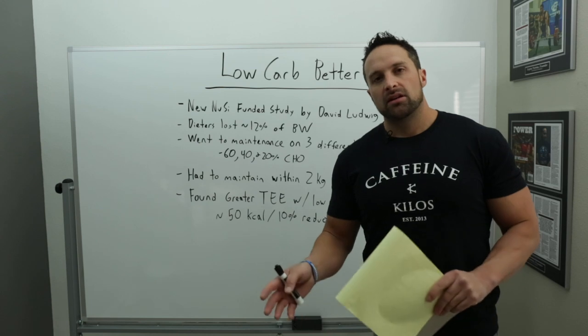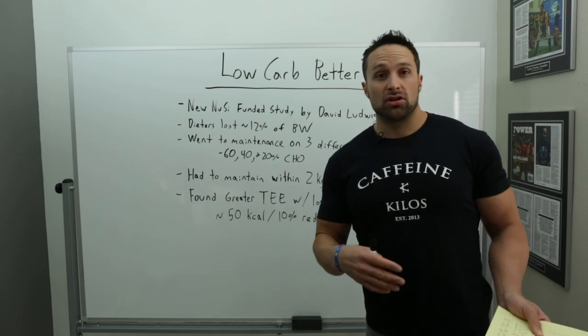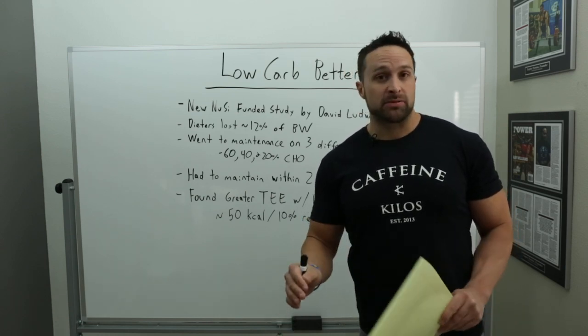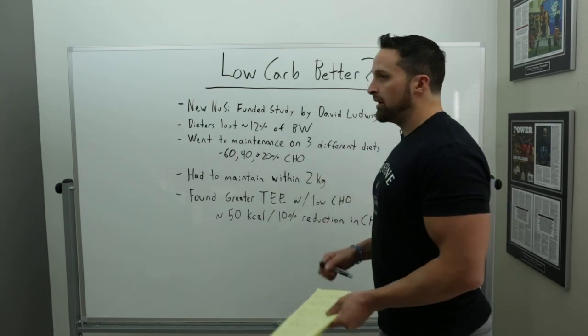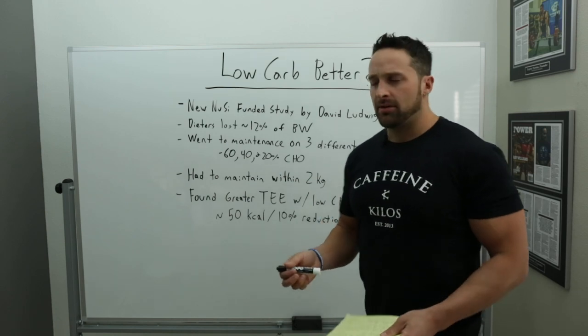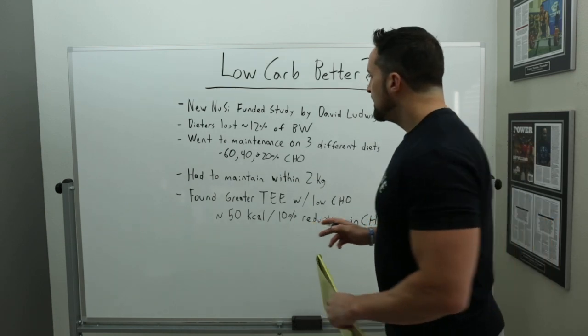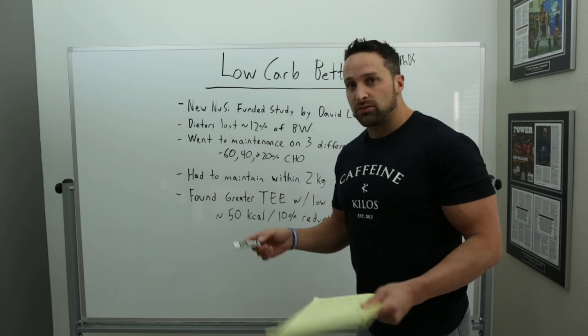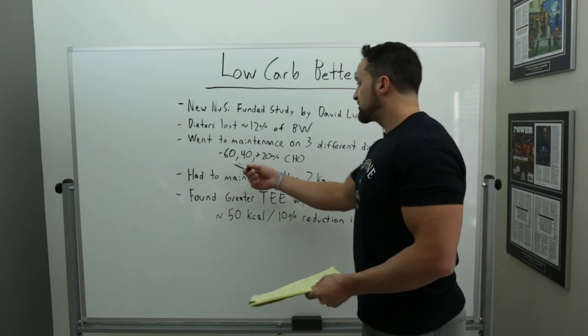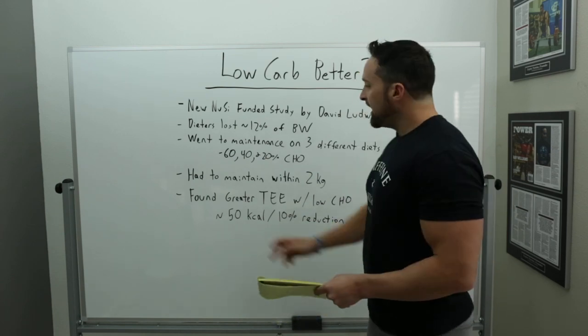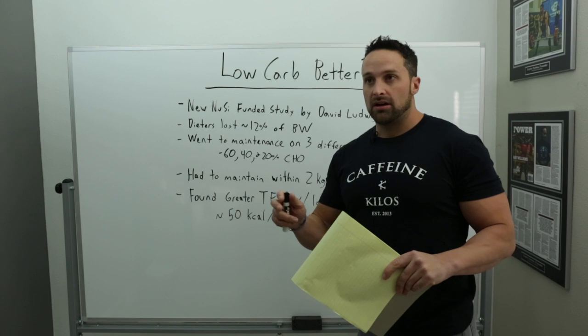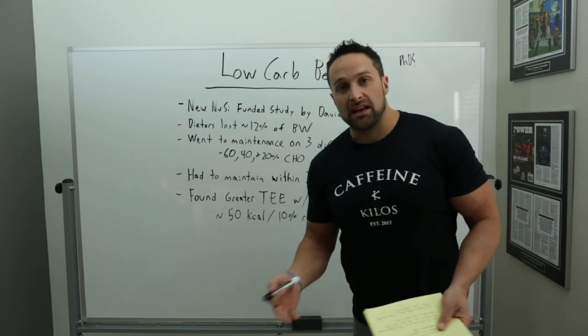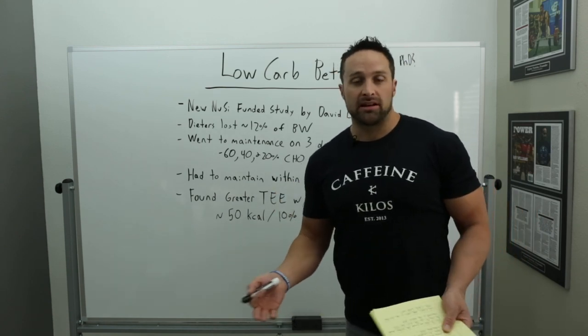In this study, they wanted to examine what happens when they change the ratio of carbohydrate to fat in a post-diet setting on maintaining body weight and energy expenditure. They had dieters lose about 12% of their body weight on a run-in diet, which was 45% carbohydrate, I believe. Interesting. Then they had them go to maintenance over the course of a few weeks using three different diets with different levels of dietary carbohydrate, either 60, 40, or 20% carbohydrate. And they had to maintain within two kilograms of what they ended the diet at. So, they wanted to see, okay, which diet, if any, had a bigger impact on metabolic rate and energy expenditure.